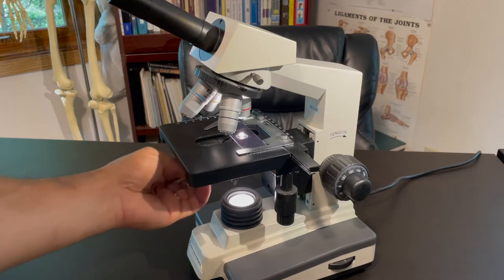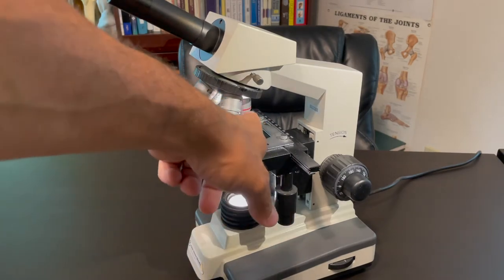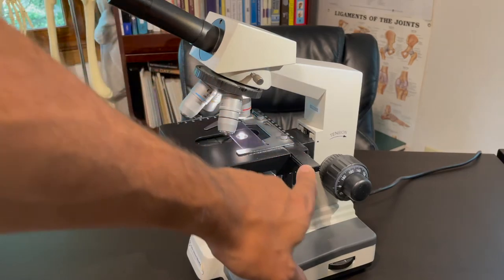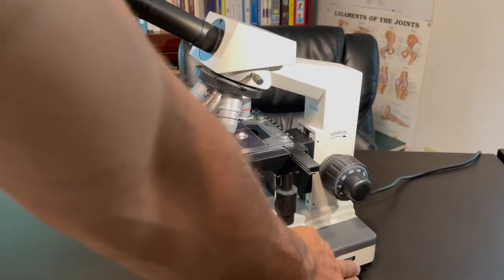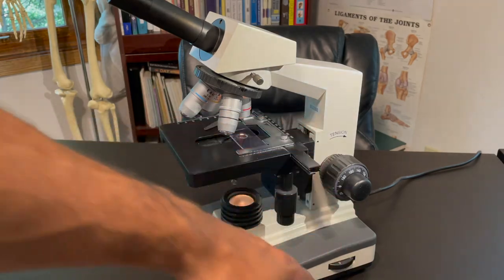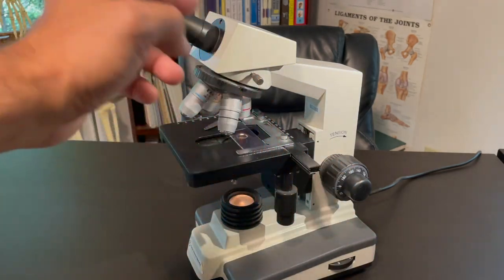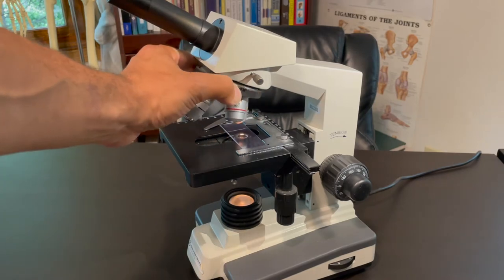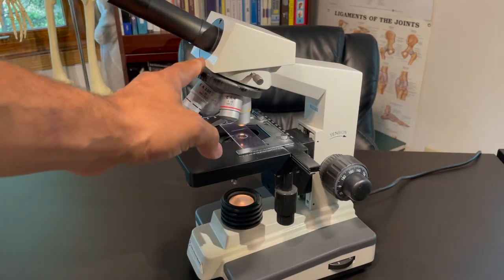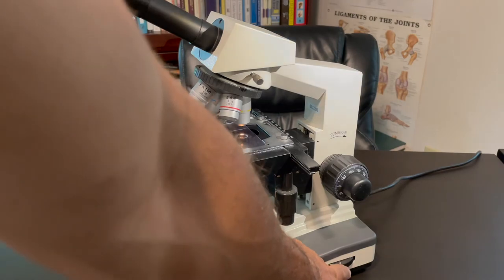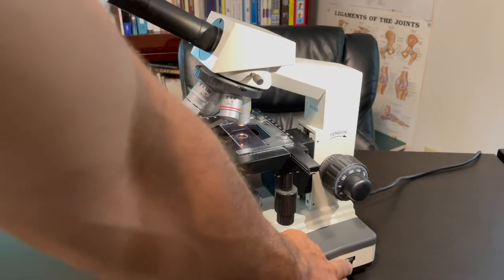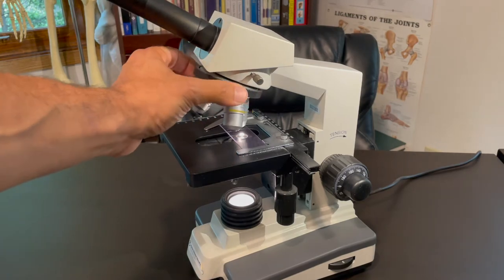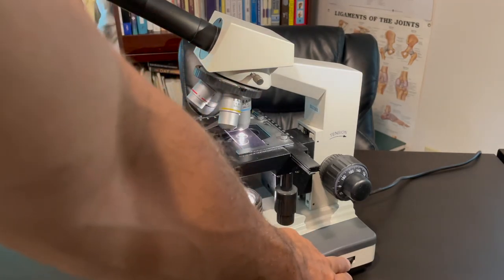And also one more thing that you'll need to do is when you first begin and you're on the 4x, when you're on the red, the light will be really, really bright. So you only use as much light as you need when you're looking through. However, as you turn up the magnification, you're going to need to turn up that light source a little bit more. And then you go to the blue, you'll need to turn up that light source even more.